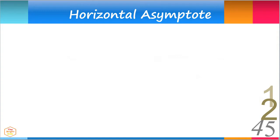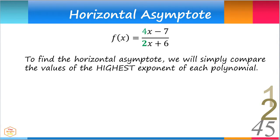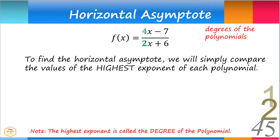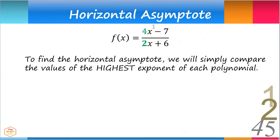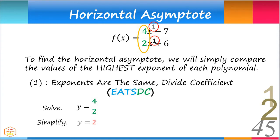Let's look at another rational function. To find its horizontal asymptote, we compare the values of the highest exponent of each polynomial — also termed the degrees of the polynomials. In the numerator, the highest exponent is 1, and in the denominator, it is also 1. Since the exponents are the same, we divide the coefficients: 4 divided by 2 equals 2. Thus, the horizontal asymptote is y equals 2.